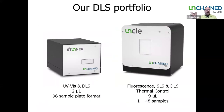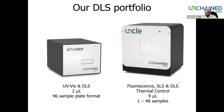At Unchained Labs, we cover DLS really completely. On the left we have the Stunner instrument, which is the only UV-Vis instrument that has DLS capabilities. It's a fantastic high-throughput, low sample volume instrument that uses 96-well plates that are SBS compliant and is completely amenable to automation. If you want to do A280 KD analysis or dig deep into your AAV titers or empty-full ratios, the Stunner is a fabulous instrument — truly one of a kind.